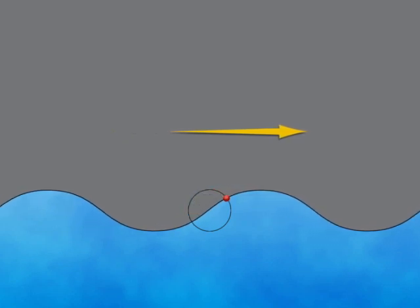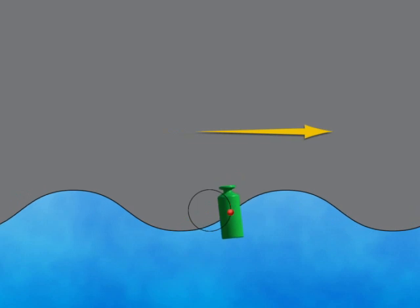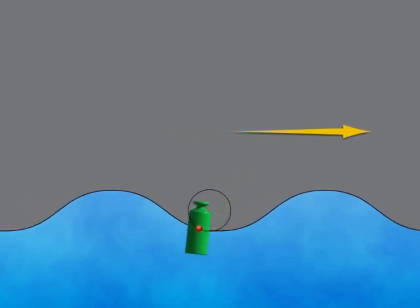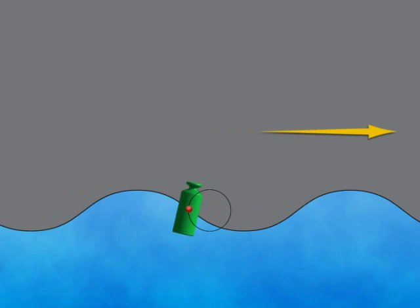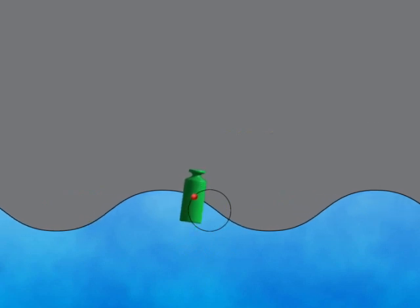So, a bottle thrown into the sea will follow the circular movement of the water particles and not move forward unless pushed by the wind or carried by a sea current.